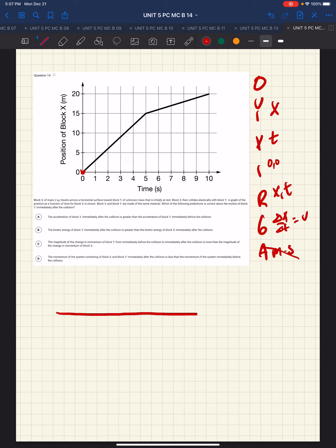We'll draw a picture. We have a block X of mass 2 kilograms travels across a horizontal surface toward a block Y of unknown mass. X then collides elastically, which means the kinetic energy is conserved. And so, we know it's bouncy. Graph of the position as a function of time for X is shown. They're made of the same material.